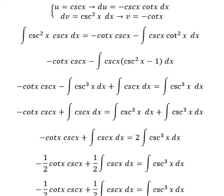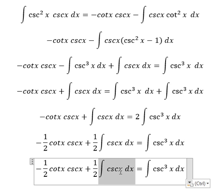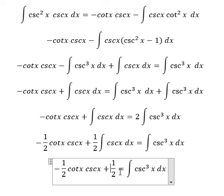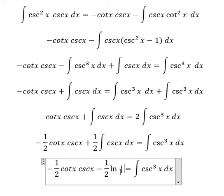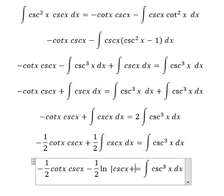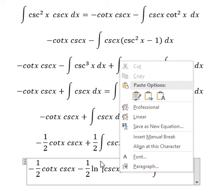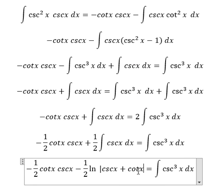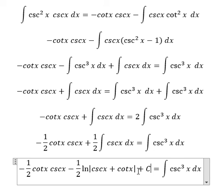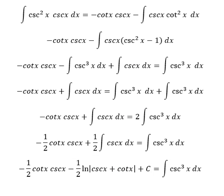Next, the integration of this one, we will have negative ln of the absolute value of cosecant x plus cotangent x, and we put c here. And that is the final answer. This is the end, thank you for watching, see you soon.